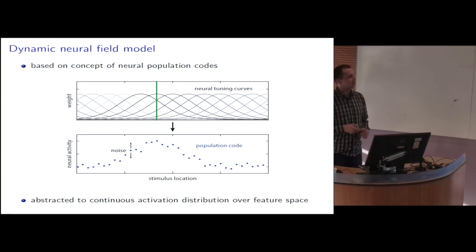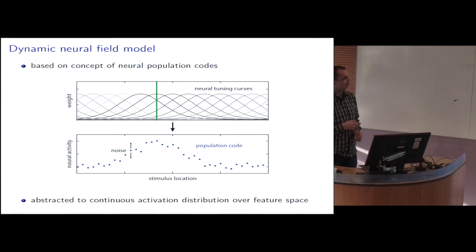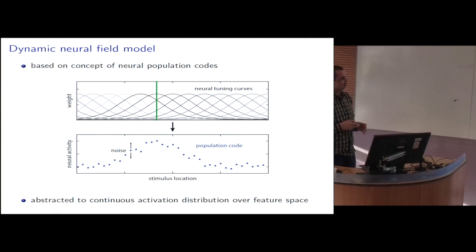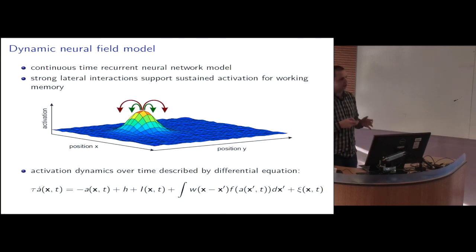The kind of model we used is a dynamic neural field model, sometimes called an attractor network or continuous attractor network. It is based on the concept of neural population codes: to represent continuous value stimuli such as stimulus location, you have a population of neurons whose tuning curves cover the feature space, and when a specific value is presented, you get a distribution of activation — a neural representation as a population code. The dynamic field model abstracts from individual neurons and simply describes this as a neural activation distribution over the feature space, for example a two-dimensional visual space with an activation bump reflecting a single stimulus location.